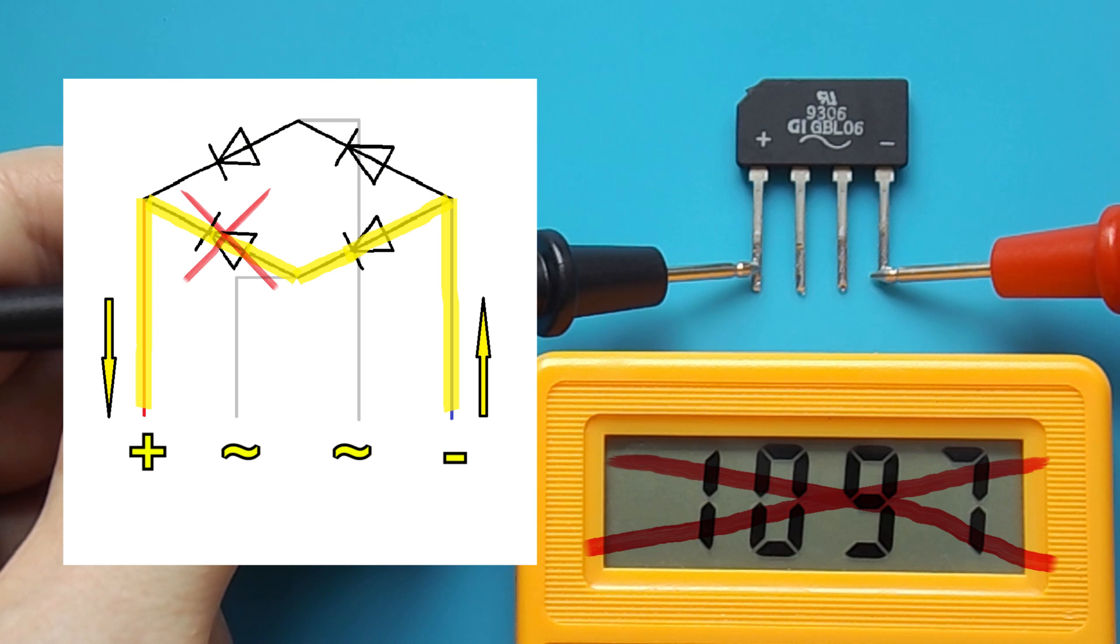If any of the diodes is broken, it will have zero resistance. The multimeter in this case will show the voltage drop immediately through one diode.